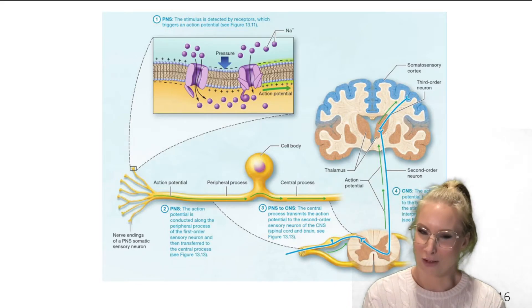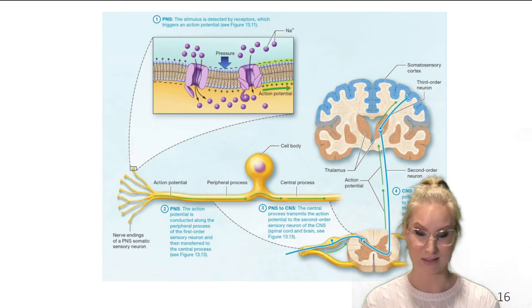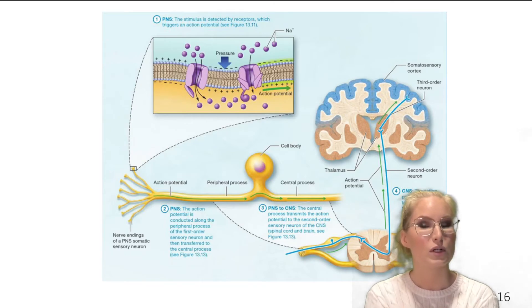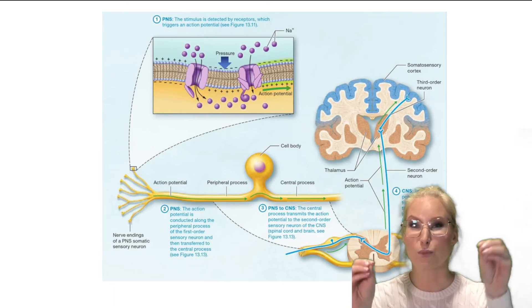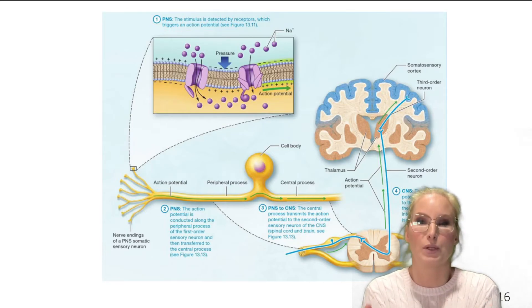Now, you might also be wondering, why is it just not going straight to the somatosensory cortex? And why is it stopping in the thalamus? Well, another great question, because the thalamus is a really important integration center. So the thalamus is taking in information from all the different regions of the brain, and it's allowing your brain to decide whether or how to respond to that particular stimuli.